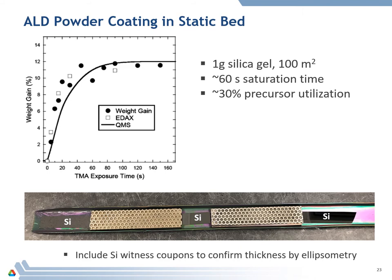Coating powder in a static bed in a metal tray works fairly well. We took one-gram samples of silica gel with 100 square meters per gram surface area and coated that with aluminum oxide by ALD using different TMA exposure times. The weight gain saturates after about 60 seconds, and we calculate about only 30% precursor utilization — the remaining 70% flows over the sample unreacted. So it's not terribly efficient, but it is simple and effective. We also place pieces of silicon around the powder carriers to afterwards measure film thickness using ellipsometry.